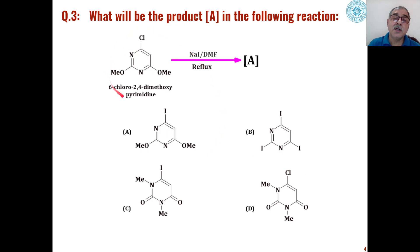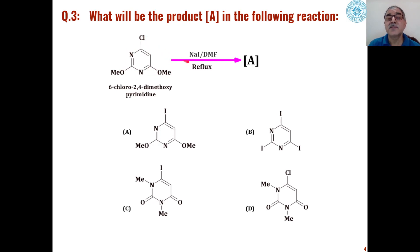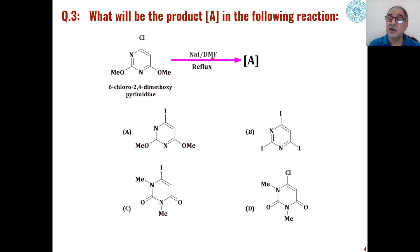The third problem is: when this substrate, 6-chloro-2,4-dimethoxypyrimidine, is reacted under the conditions of sodium iodide in dimethylformamide under reflux, what is the product formed out of these four choices?